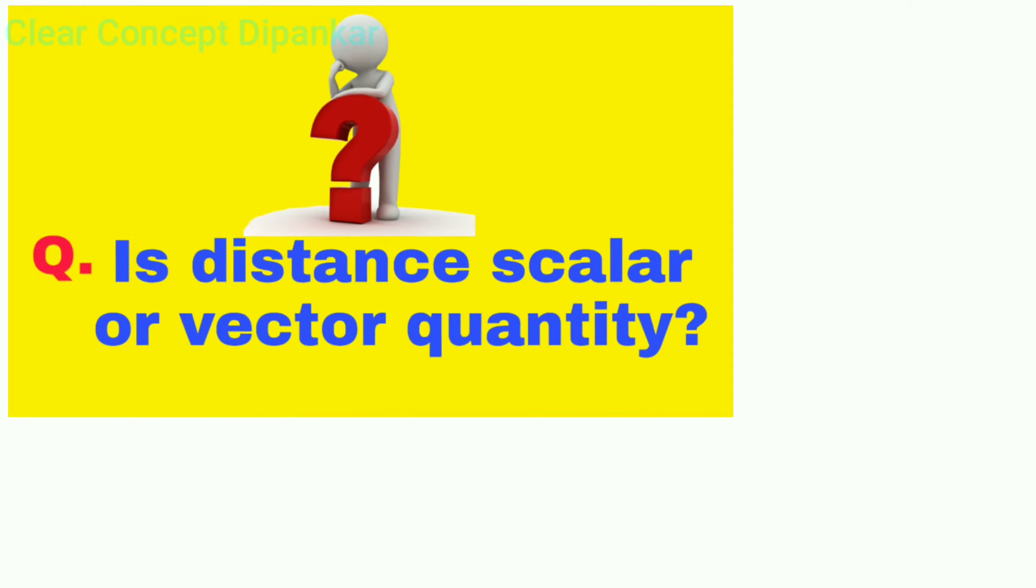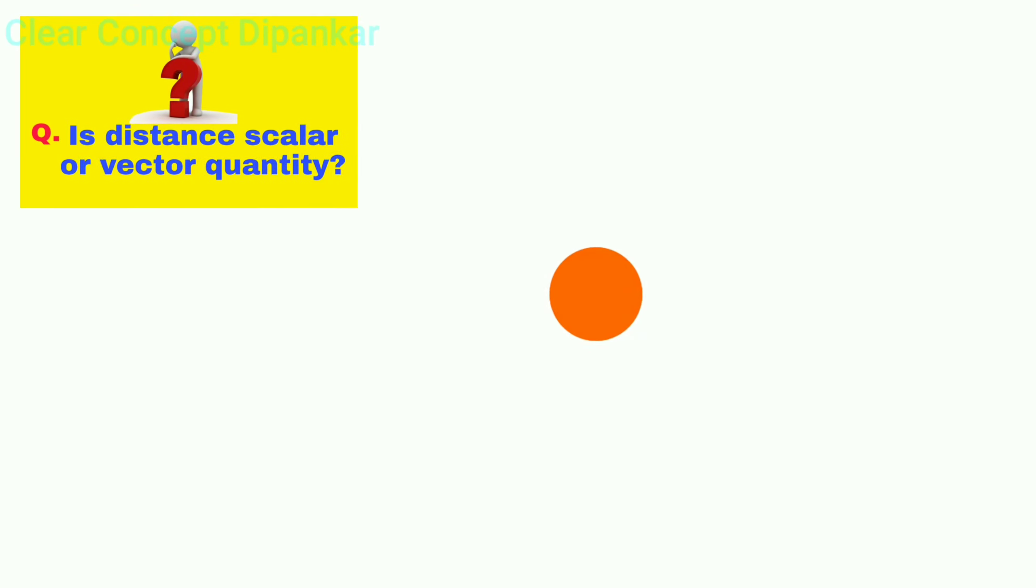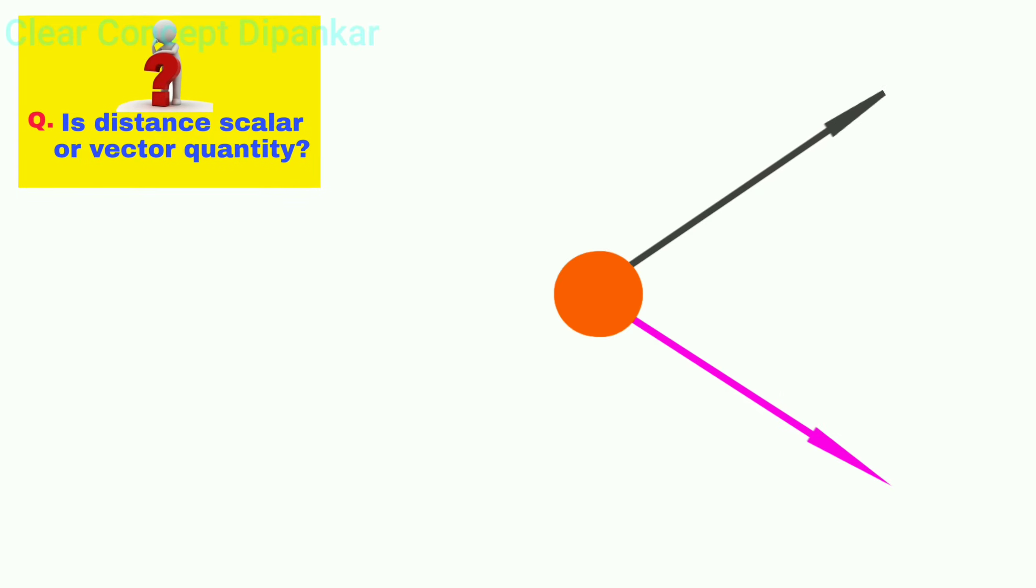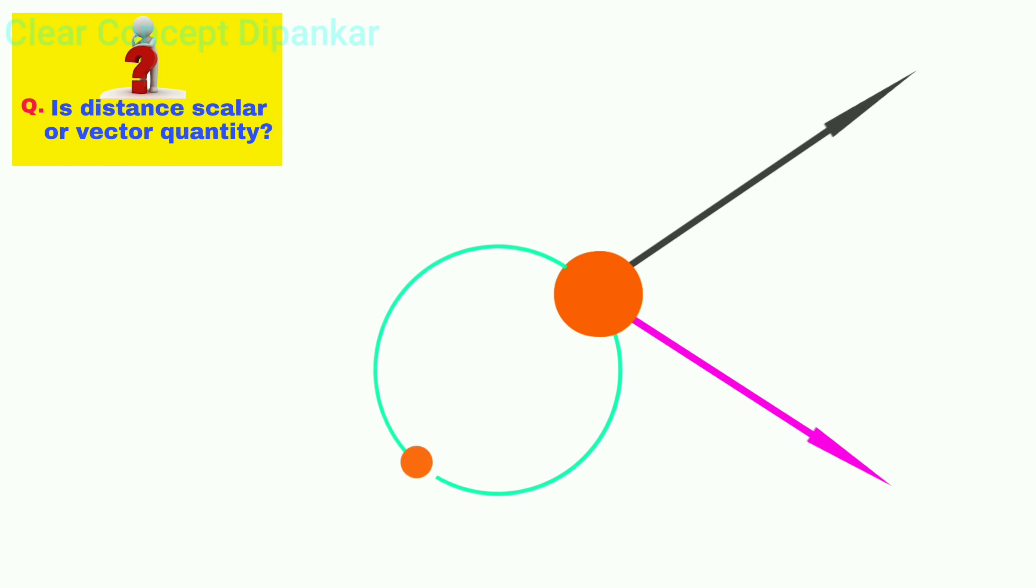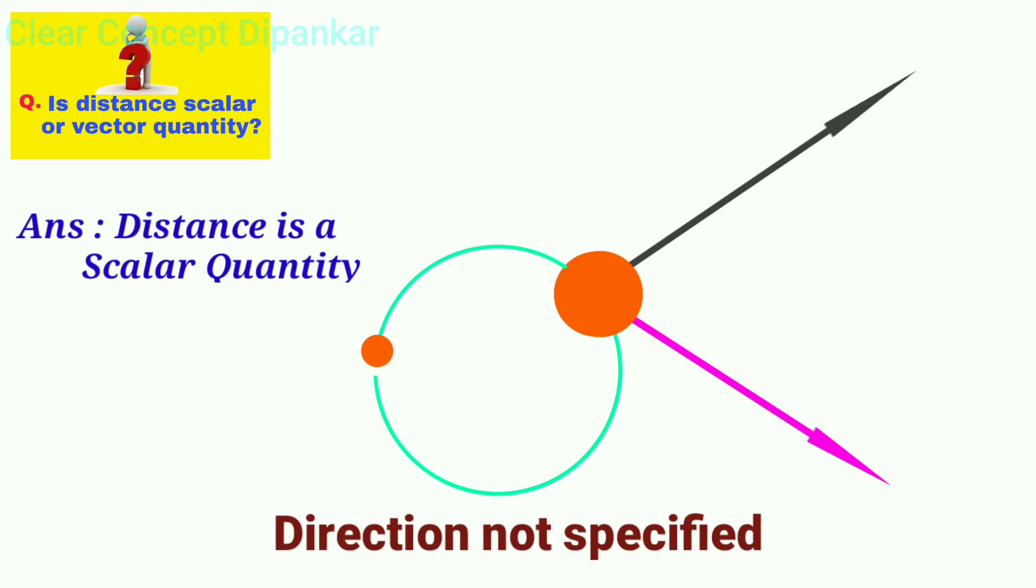Is distance a scalar or vector quantity? If you say someone traveled 20 kilometers from this point, you can't really tell where he landed up. Maybe here, maybe there or maybe just went around in a circle. As it does not specify a direction, it is a scalar quantity.